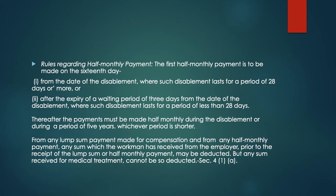Thereafter, the payment must be made half monthly during the disablement or during a period of 5 years, whichever is shorter. From any lump sum or half monthly payment, any sum which the workman has received from the employer prior to the receipt of that lump sum or half monthly payment may be deducted. However, any sum received for medical treatment cannot be so deducted. This is mentioned in Section 4(1)(a).